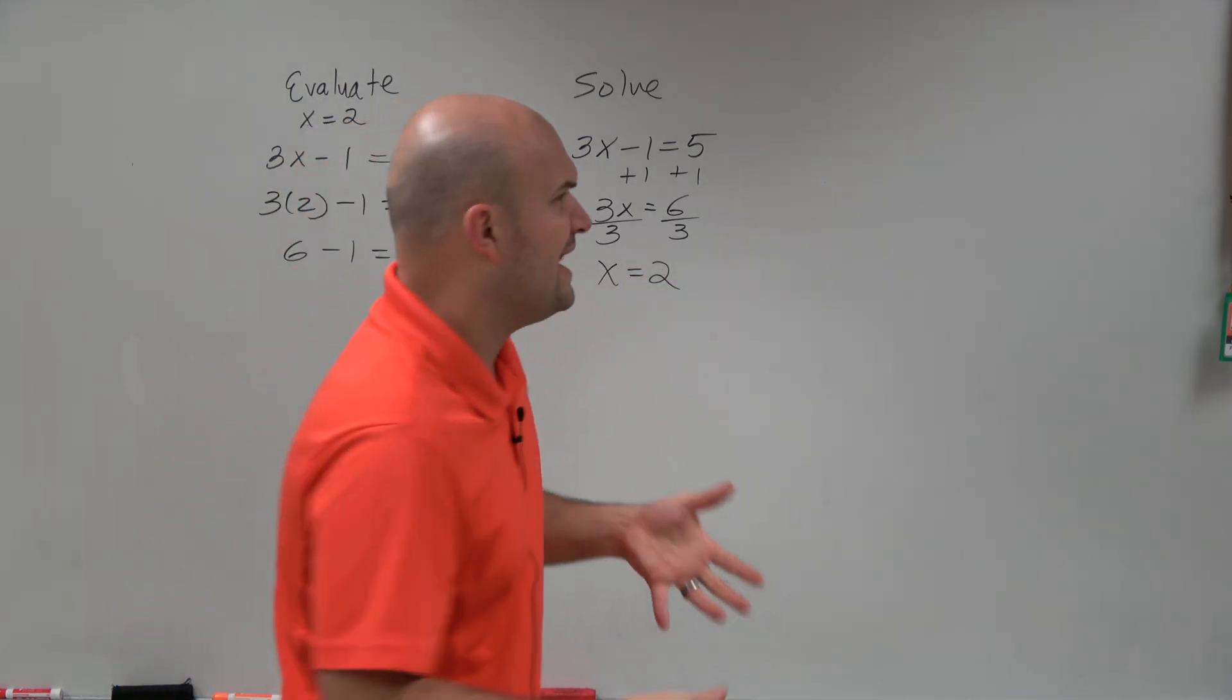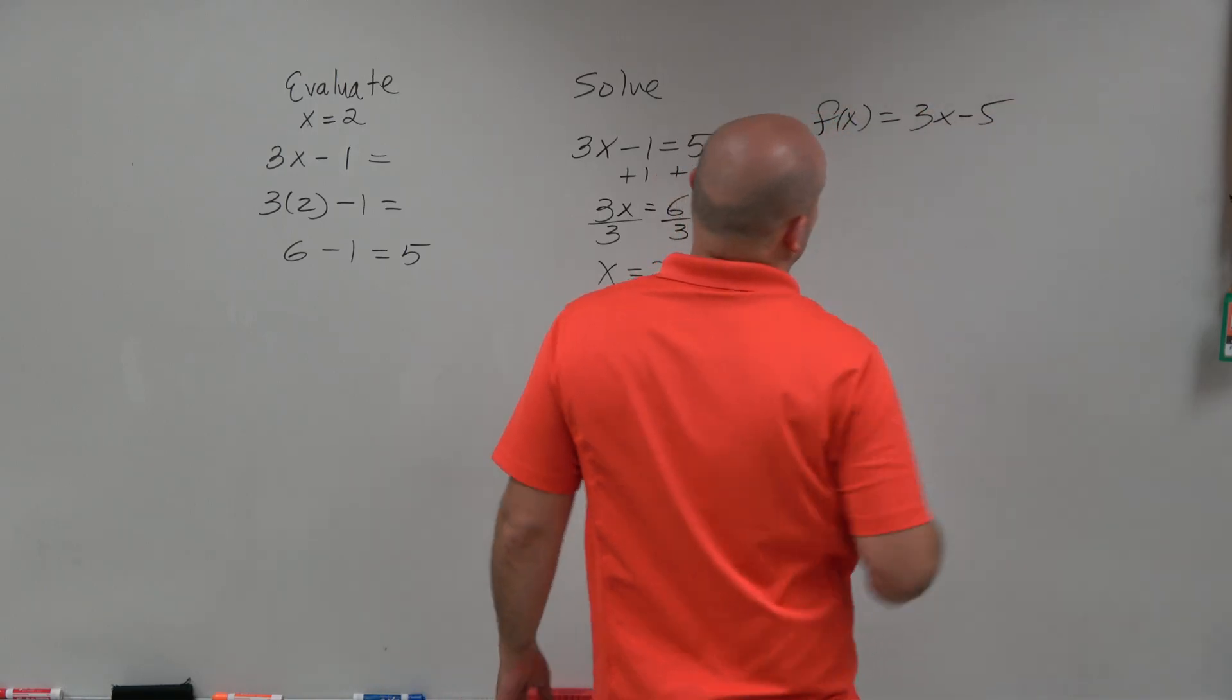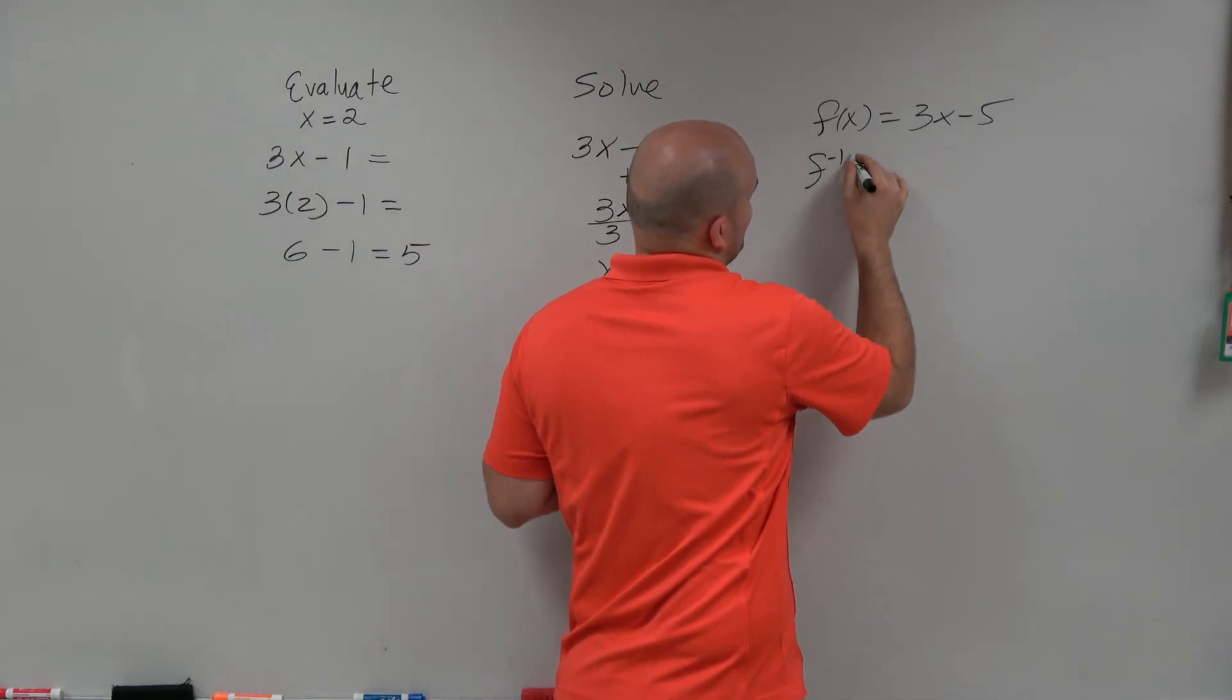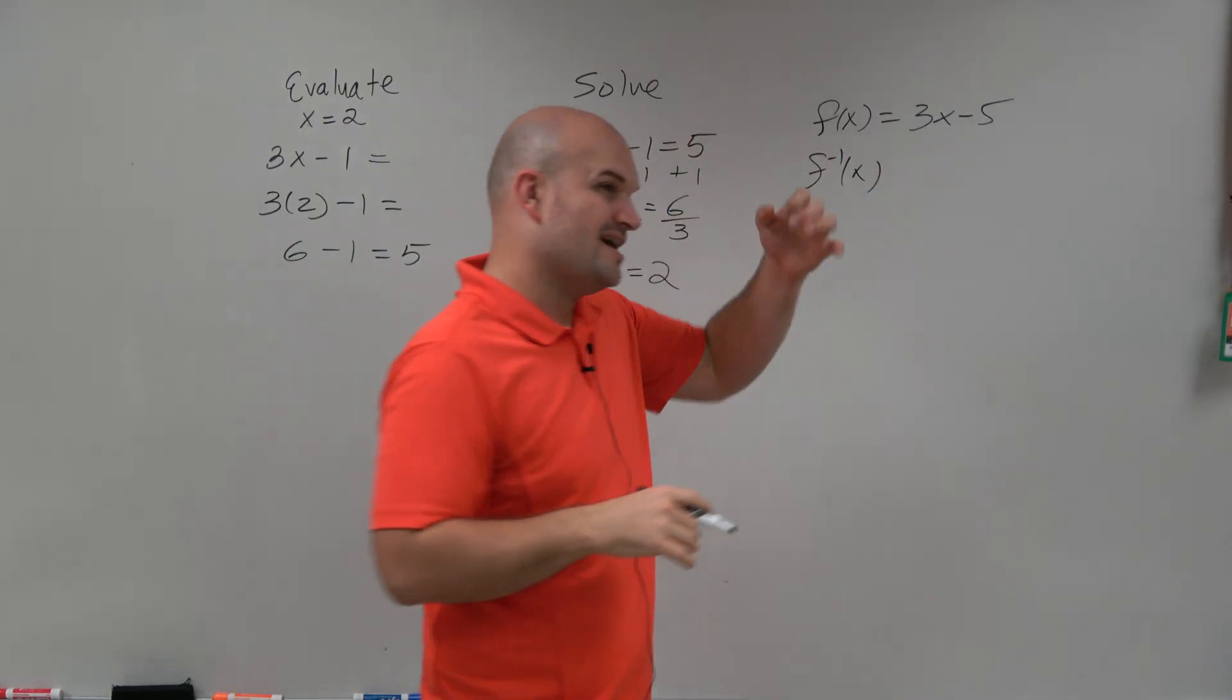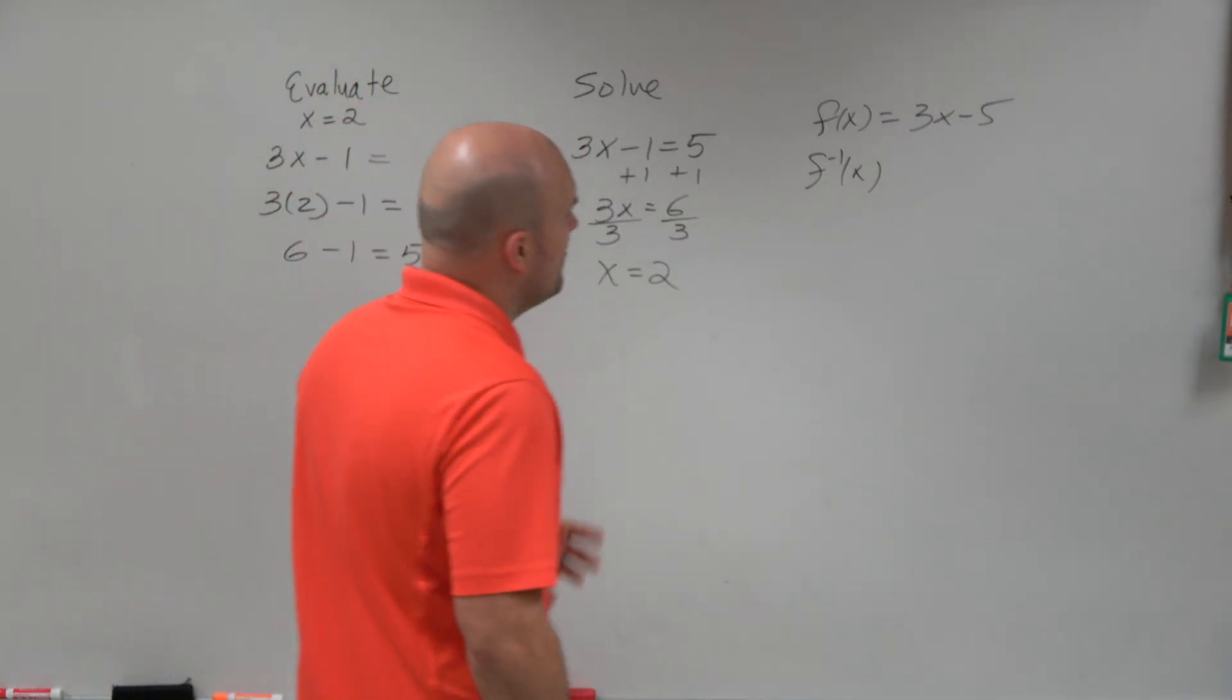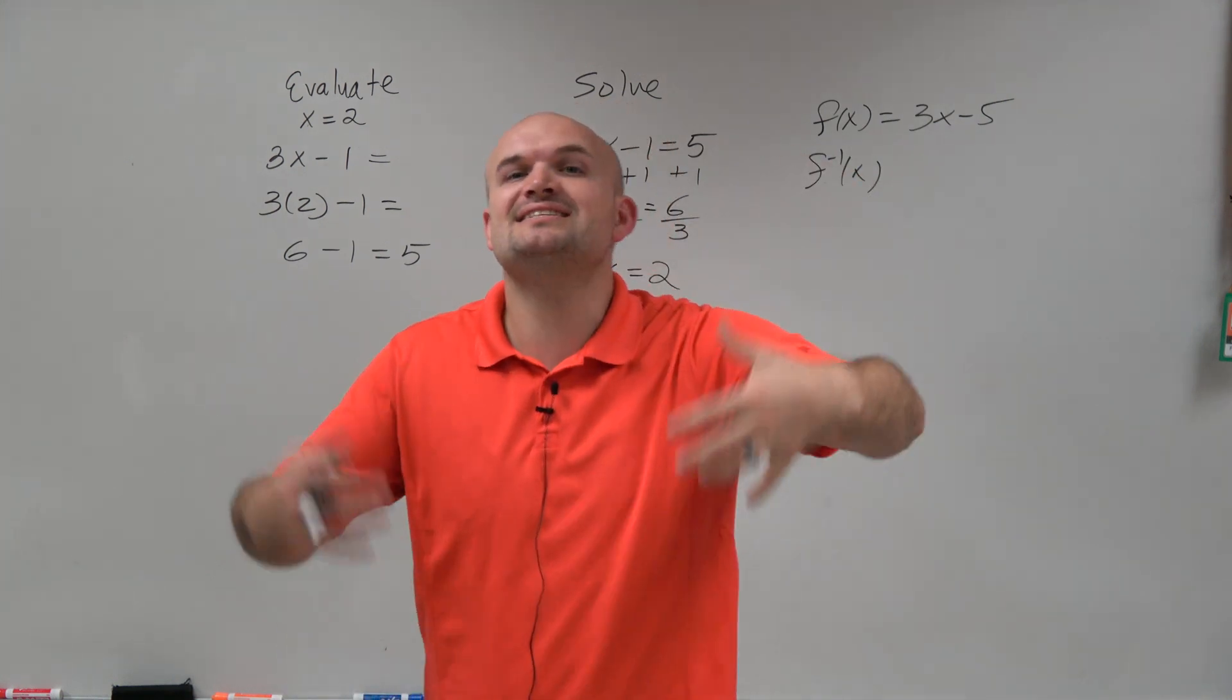So when we're looking at any function, let's just look at f(x) equals 3x minus 5. When we're looking for the inverse, we're going to use the inverse notation like this. It's going to be like f raised to negative 1. It doesn't mean raised to the negative 1. That's just the inverse notation.